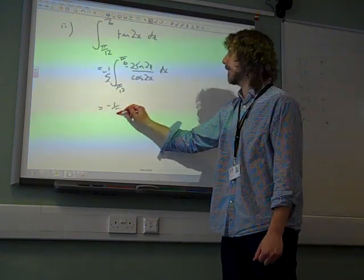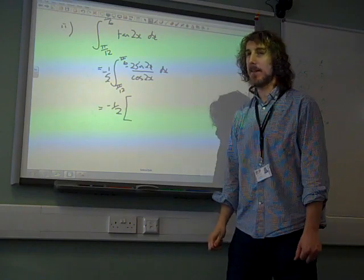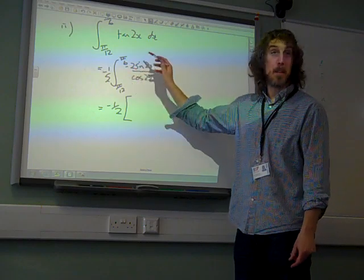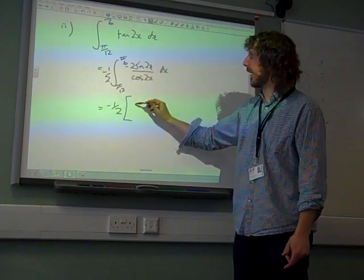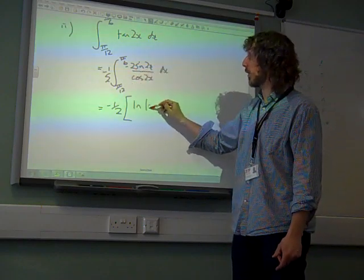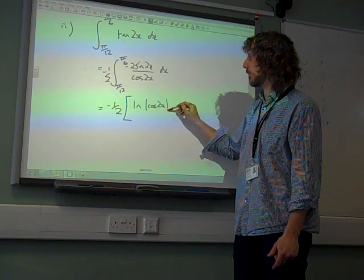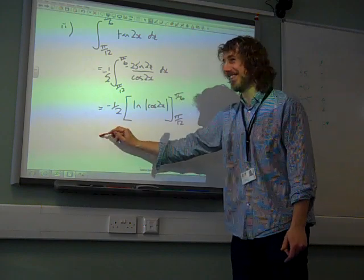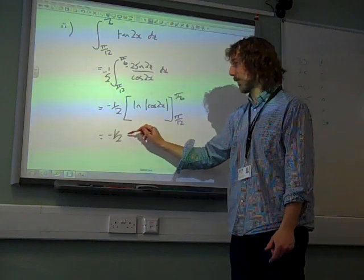We now have minus a half times. We've now got the top is the derivative of the bottom. So it's the natural log of cos 2x. This is a stupid way of doing this. Why would I do this? What is wrong with me?